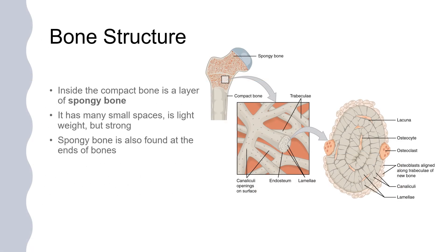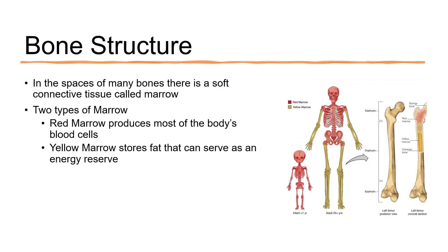Beneath the compact bone is the spongy bone, which has a porous and lattice structure that makes it lightweight but still strong. Spongy bone contains bone marrow, which is the soft tissue that fills the gaps between the bone's lattice structure. Spongy bone marrow is responsible for producing blood cells and immune cells in the body. There are two types of marrow: red marrow produces most of the body's blood cells, and yellow marrow stores fat that can serve as an energy reserve.